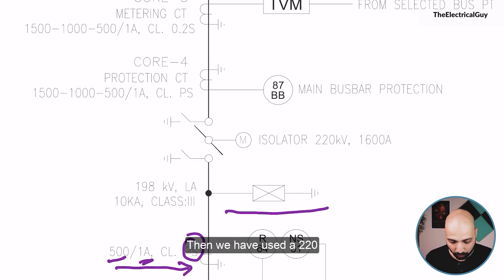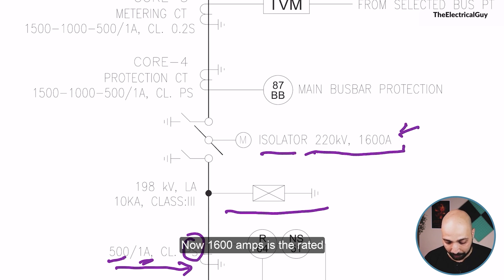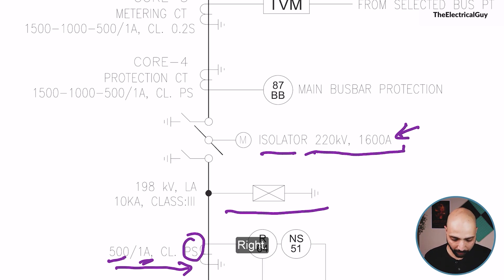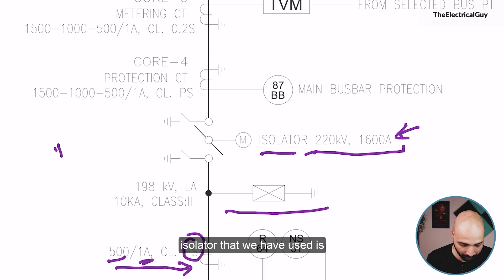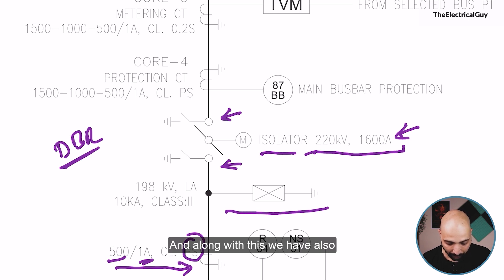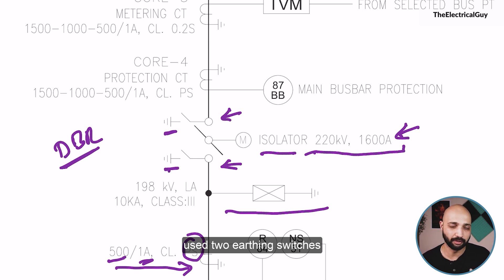Then we have used a 220 kV, 1600 amp isolator. Now 1600 amps is the rated current for that equipment. The isolator used is double break type, or DBR type — it breaks from both ends. Along with this we have also used two earthing switches with the isolator.